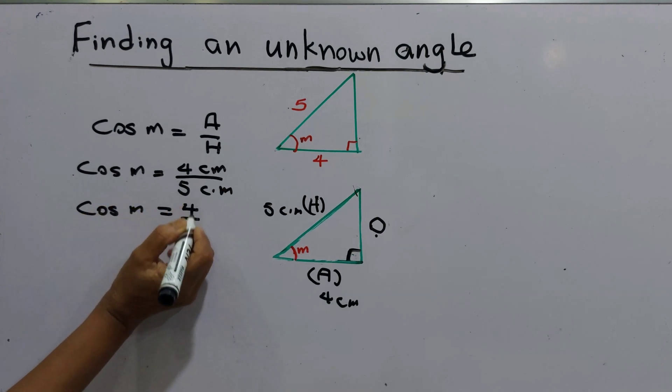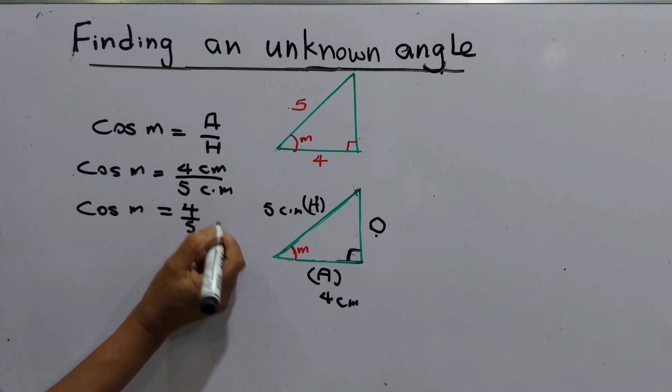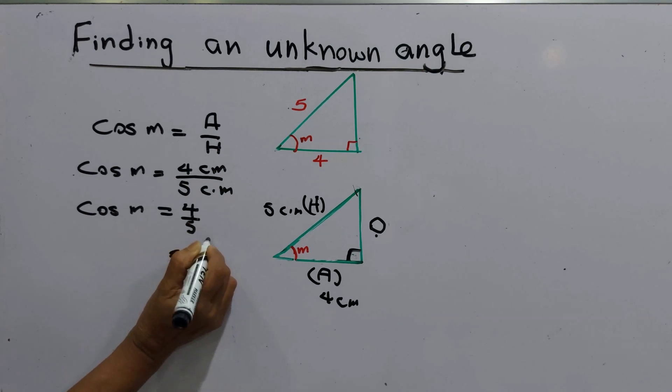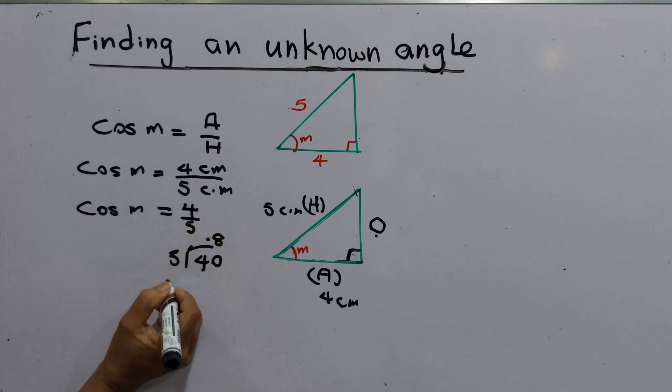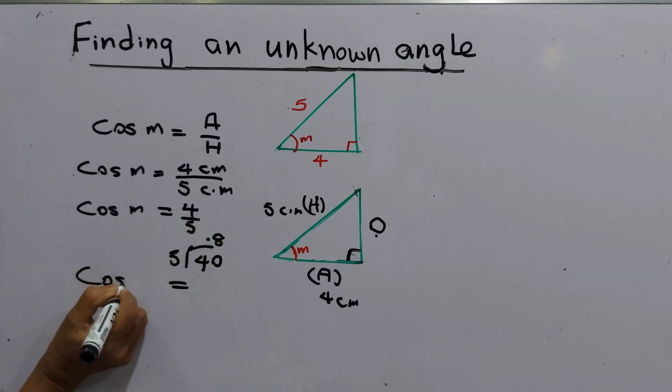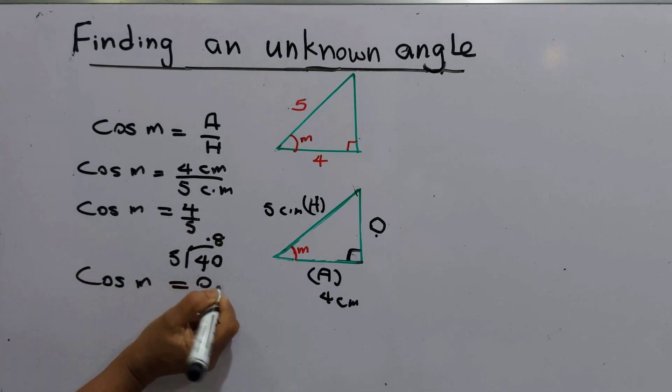Then we have to change this to a decimal number. That means four divided by five. That is easy. We have to add point here 0 and then it is 0.8. That means cos M equals 0.8.